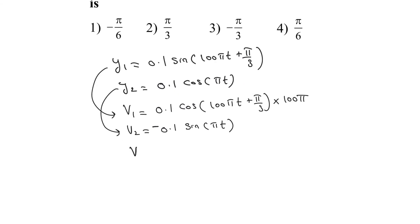The second equation can be rewritten as 0.1 cos(πt + π/2).